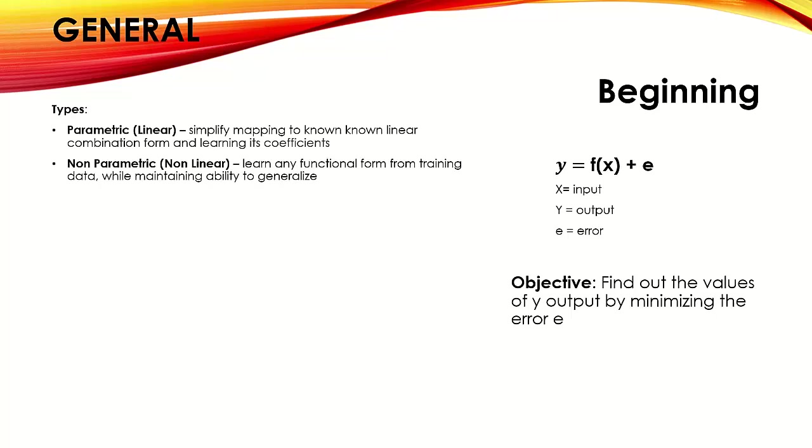One is called the input variable, which is denoted by X, and the output variable, which is denoted by Y. The model is denoted by function of input data, F(X). The model generally introduces some error, denoted by E. So the machine learning model objective is to minimize the error while predicting the output based on the input data.